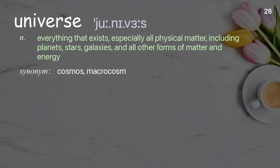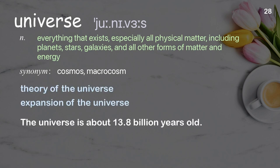Universe: Everything that exists, especially all physical matter, including planets, stars, galaxies, and all other forms of matter and energy. Examples: Theory of the universe, expansion of the universe. The universe is about 13.8 billion years old.